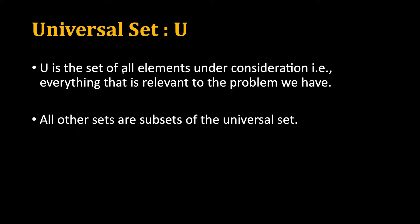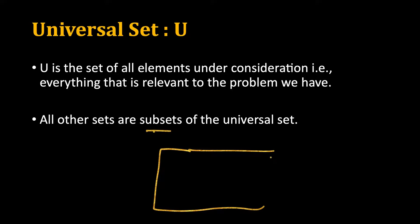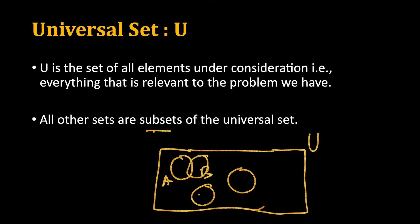Next we have the concept of a universal set — it is the set of all elements under consideration, everything relevant to the problem we are trying to solve. If we include all possible elements that can be present in different sets under a given problem, we call that the universal set, and all other sets are subsets of it. In a Venn diagram, the universal set is drawn as a big rectangle, with multiple sets A, B, C, D inside it — some overlapping, some disjoint.